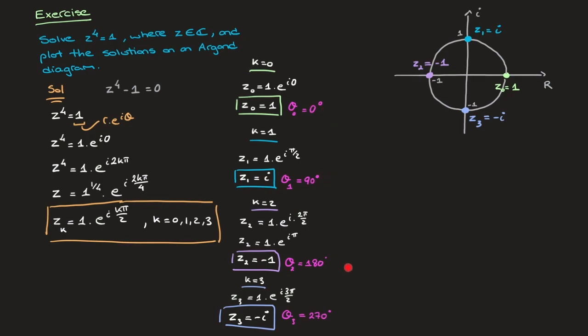At this stage we have all four roots. On the Argand diagram, we have the two real zeros 1 and negative 1, and the two complex zeros i and negative i, which are clearly complex conjugates with opposite imaginary parts. It's also worth pointing out that these four roots form the vertices of a square on the Argand diagram — similar to the cube roots of unity forming an equilateral triangle. If we solved z to the power of 5, the roots would form the vertices of a regular pentagon, or a regular hexagon for z to the power of 6, and so on.